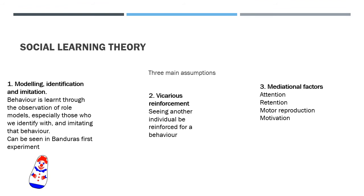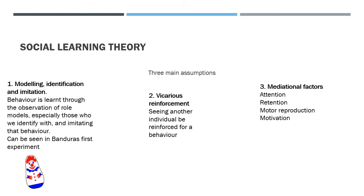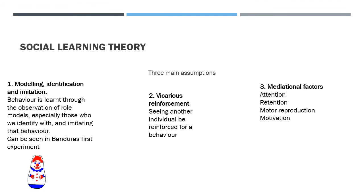The second assumption is vicarious reinforcement — seeing another individual be reinforced for their behaviour. In another Bandura study, children who saw a peer be rewarded with sweets and a drink for aggression towards the Bobo doll were more aggressive themselves. Those who saw a peer be shouted at for aggression were the least aggressive. This shows we learn through seeing others be rewarded or punished for their behaviours.